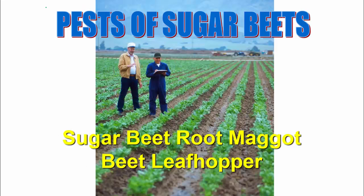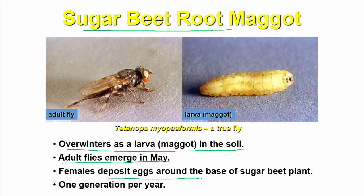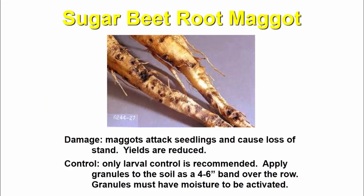Next are pests of sugar beet: sugar beet root maggot and beet leafhopper. For the sugar beet root maggot, the adult is a fly and the larvae are maggots. Females deposit eggs near sugar beets. There is one generation per year. Maggots attack seedlings and cause loss of stand, reducing yield.